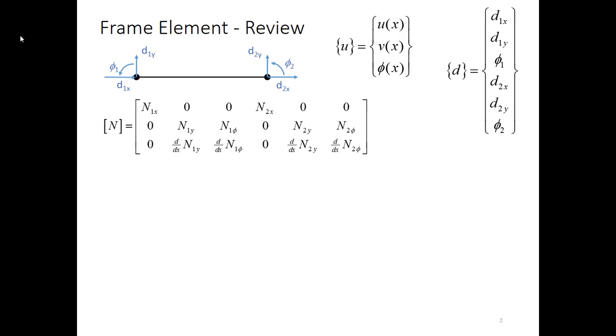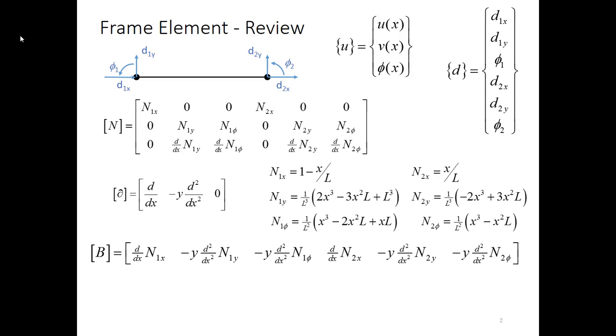The shape functions that we developed for the frame matrix have the shape functions for bar element: 1 minus x over L and x over L, and then also the four shape functions that were developed for the Euler-Bernoulli beam element. That's the n1y, n2y, n1 phi, and n2 phi formulas shown here.